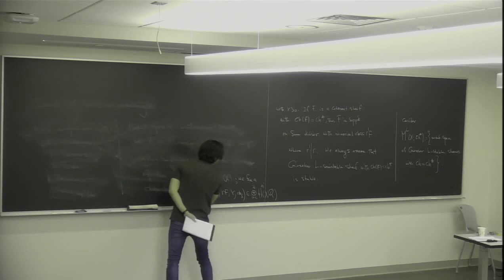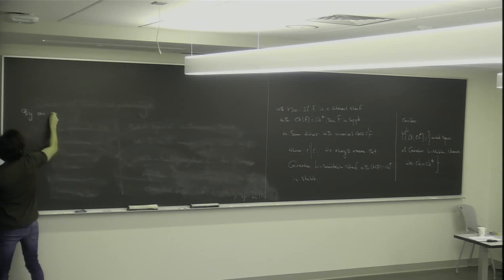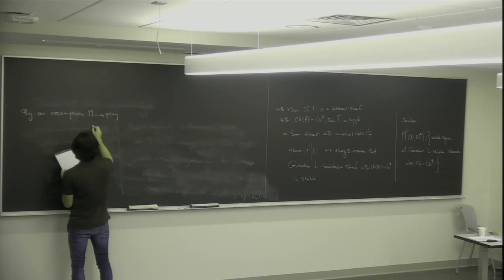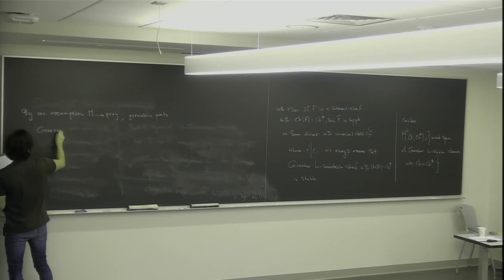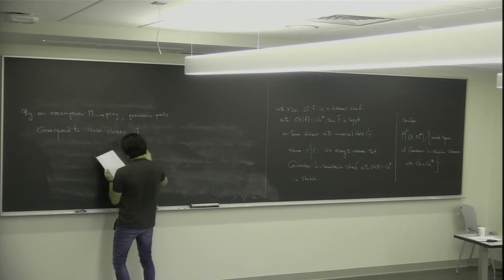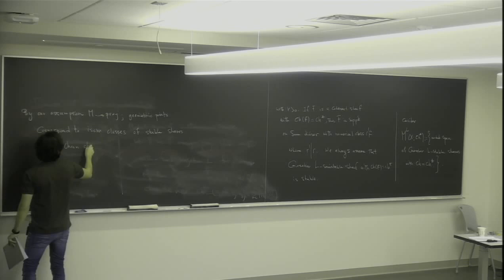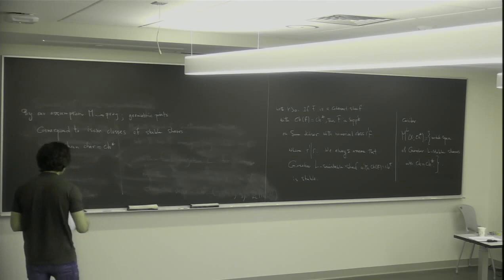At this level I haven't said anything about the particular structure of our threefold; you can always define this moduli space. By our assumption, M is a projective scheme whose geometric points correspond to isomorphism classes of stable sheaves with the given Chern character ch*. This is the projected moduli space, and now we can define the notion of invariants.